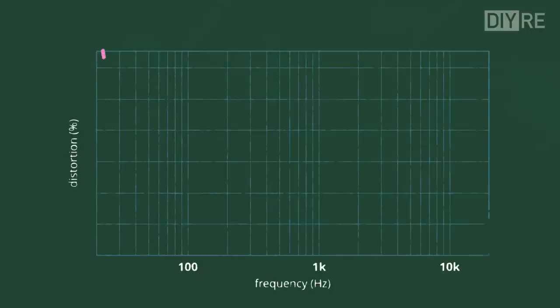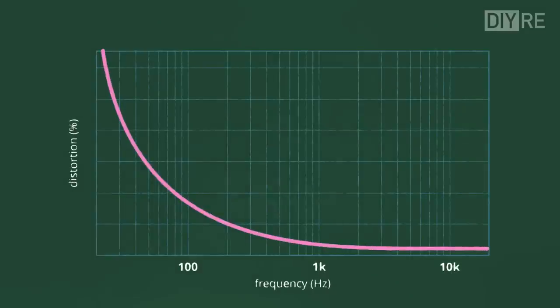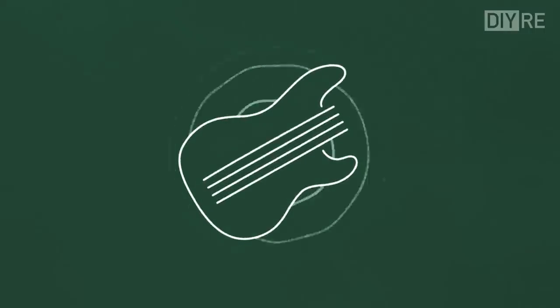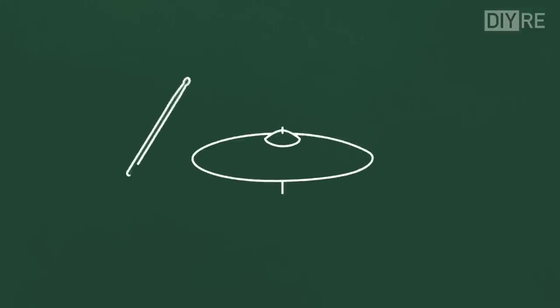What makes transformer saturation so lovely is that the distortion it creates is inversely proportional to frequency. Which is a fancy way of saying transformers create more warm, gooey, low frequency distortion, and less harsh, bright, high frequency distortion.